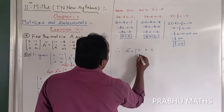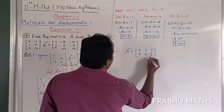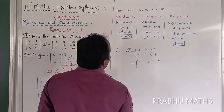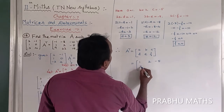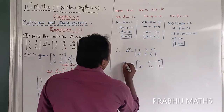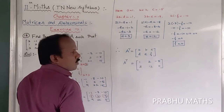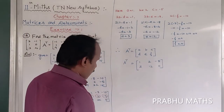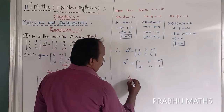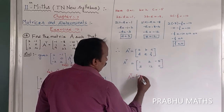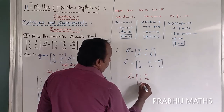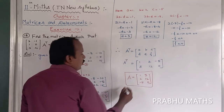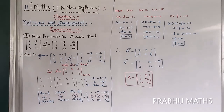Therefore A-transpose equals the 2×3 matrix: row 1 is 1, 2, -5 and row 2 is 3, 12, 0. To find matrix A, we interchange rows and columns of A-transpose (take the transpose). So A equals: 1, 3 / 2, 12 / -5, 0. That is the final answer for matrix A.